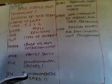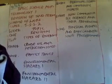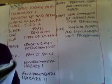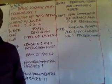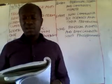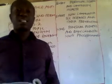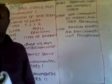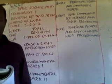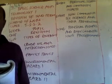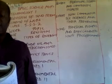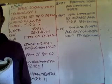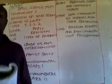We go on to the third topic, which is crude oil and petrochemicals. Under crude oil and petrochemicals, we discussed the meaning of crude oil, what crude oil is, what petrochemicals are, how to refine crude oil and the processes involved, and the uses and importance of crude oil and petrochemicals.